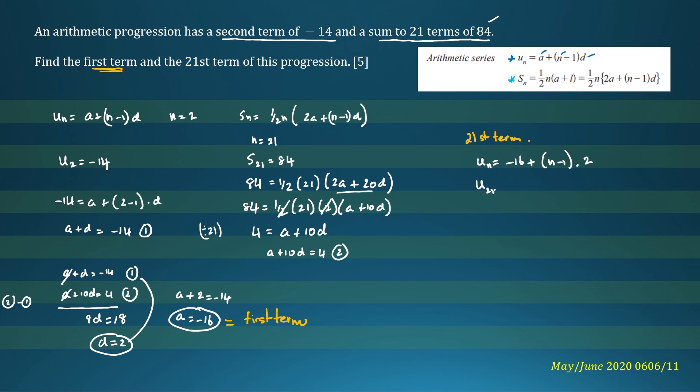So we'll write u_21 equals negative 16 plus 21 minus 1 is 20. So this will be 20 times 2. So u_21 is negative 16 plus 40. So u_21 will be equal to 24. And this is your final answer. Thanks for watching.